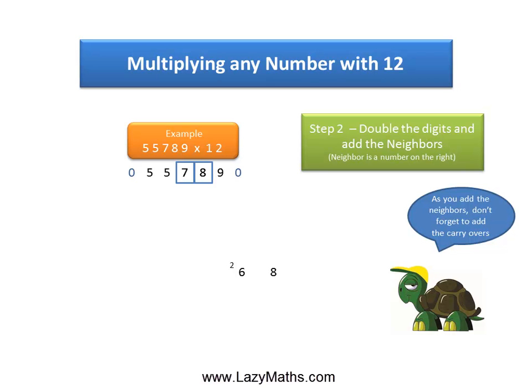Continuing with the next set, 7 and 8. Double of 7 is 14 plus 8 gives us 22. At this step also, we take care of the carryover from 26. We add the 2 from 26 to the 2 of 22 to make it 24.